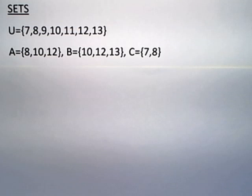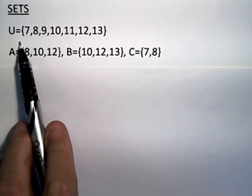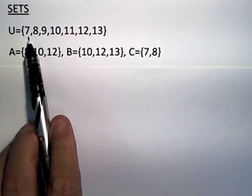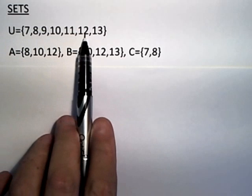I'm going to solve a series of problems to test your understanding of these basic set operations. Suppose we have a universal set consisting of the elements 7, 8, 9, 10, 11, 12, and 13.